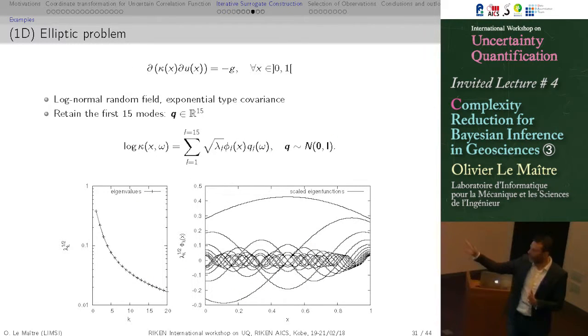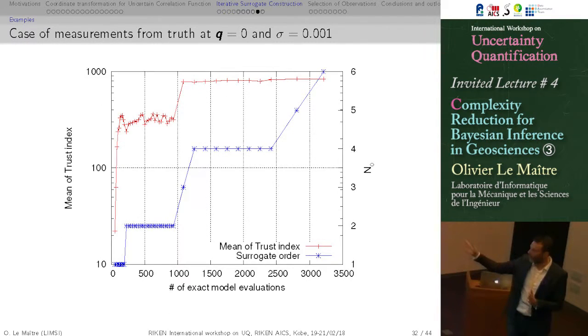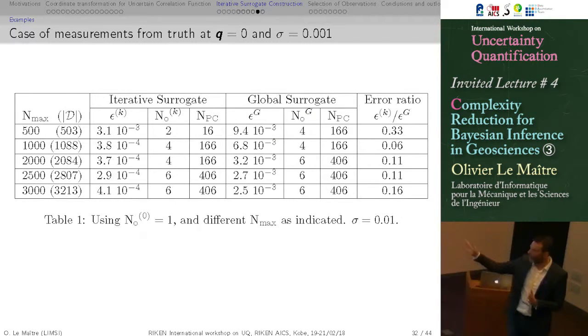This is another example. It's an elliptic field. So we are trying to learn the coordinates in a reduced basis based on the KL expansion. I think we have 15 modes, so we have to learn 15 coordinates. This is convergence of the trust index. It's just to show that it's topping at a very high value, meaning that essentially all the points you draw are on parts where the surrogate is actually accurate. In that case, what you have here is the number of simulation. So this is really the computational cost. This is the error for our iterative surrogate approach. The polynomial degree is increasing with the computational cost because we have more and more points to build the polynomial approximation in that case.